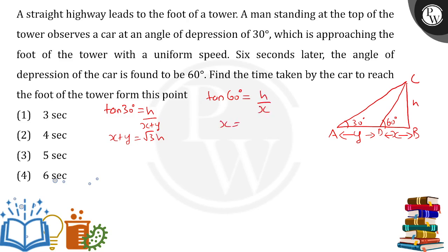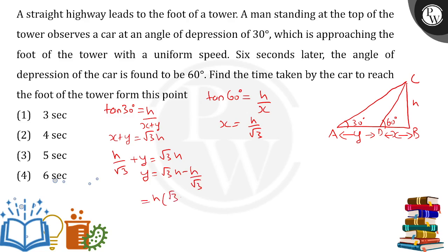From tan 60, x comes out to h upon root 3. Putting the value of x into the first equation: h upon root 3 plus y equals root 3 h. From here, y equals root 3 h minus h upon root 3. Taking h as common: h times (root 3 minus 1 upon root 3), which gives a common denominator of root 3: (3 minus 1) upon root 3, that is 2 upon root 3.